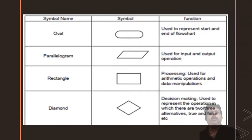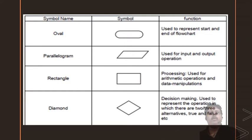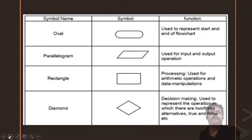Now let us try to understand where and what type of symbol should be used. In the first row, you can see an oval shape, which is used to define the start or beginning and end of the flowchart. In the second row, you can see a parallelogram that is used to define the input and output, such as a read operation or inputting two numbers. For output, such as printing area, you can also define it in a parallelogram.